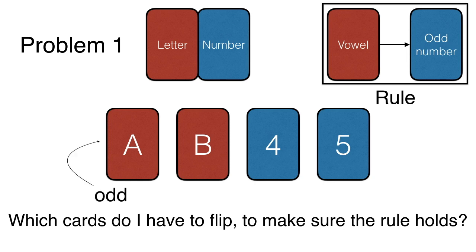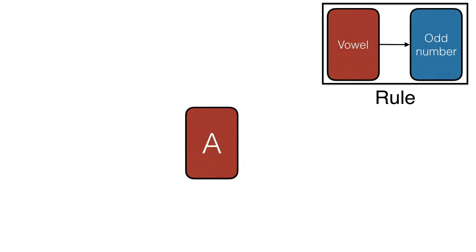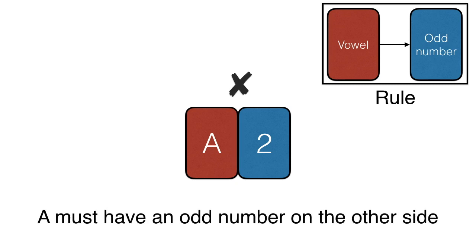And the answer is, you need to flip the A to make sure the other side has an odd number and the 4 to make sure the other side has a consonant. Why? Well, let's check card by card. Let's start with the first card, the one with the letter A. Since the letter is a vowel, then the rule tells us that the number on the other side must be an odd number. If this card were to have an even number on the other side, we would be breaking a rule because a vowel implies an odd number. Therefore, our first rule is that A must have an odd number on the other side. Let's write it down and move on to the next card.